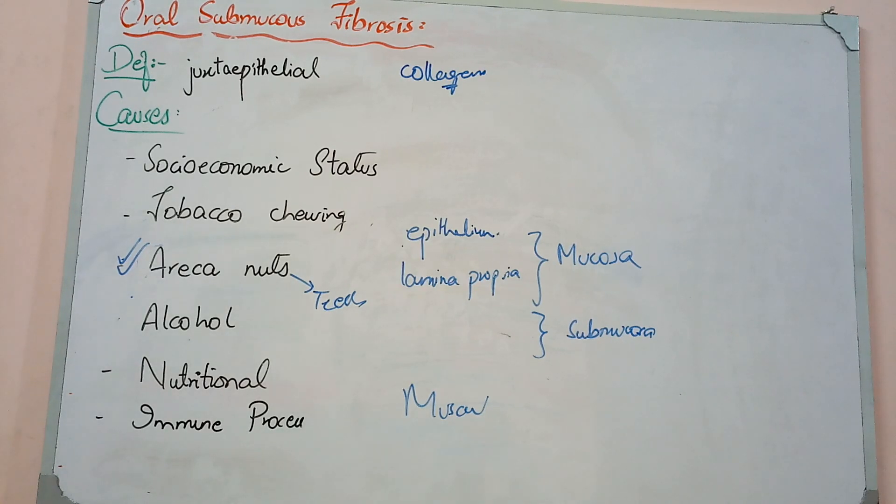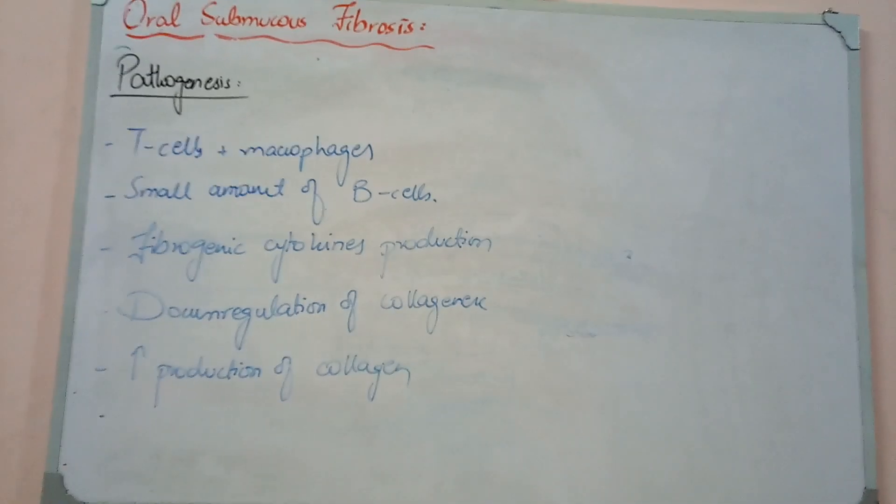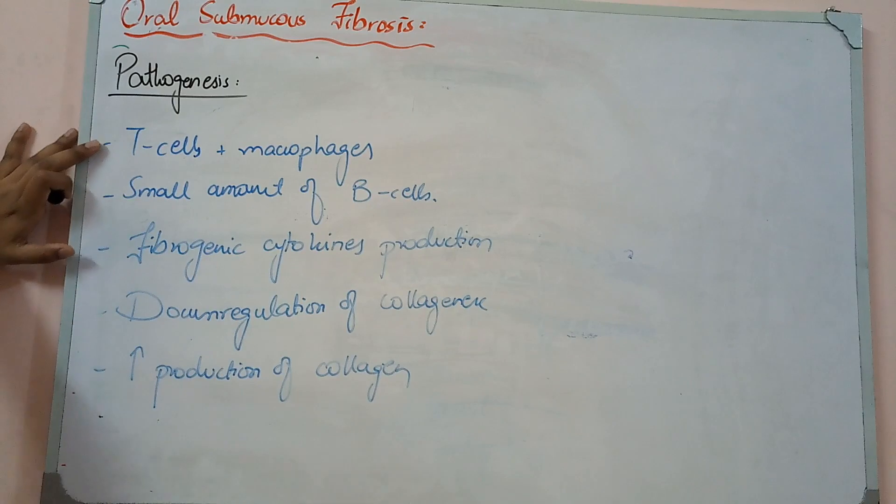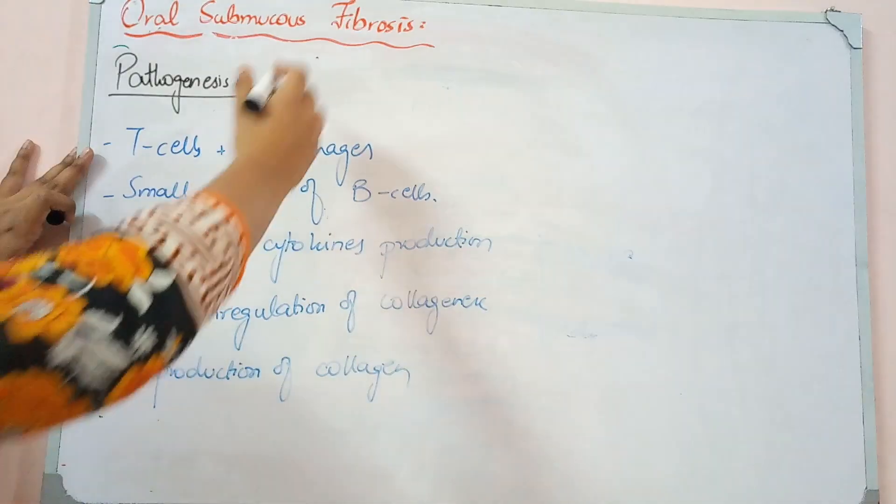Pathogenesis is very simple. Whatever risk factor results in an inflammatory process - whether alcohol, smoking, tobacco, areca nuts, nutritional deficiency, or immune response - the body generates an immune response. In any case, an immune response is generated. What happens? Immune cells come.